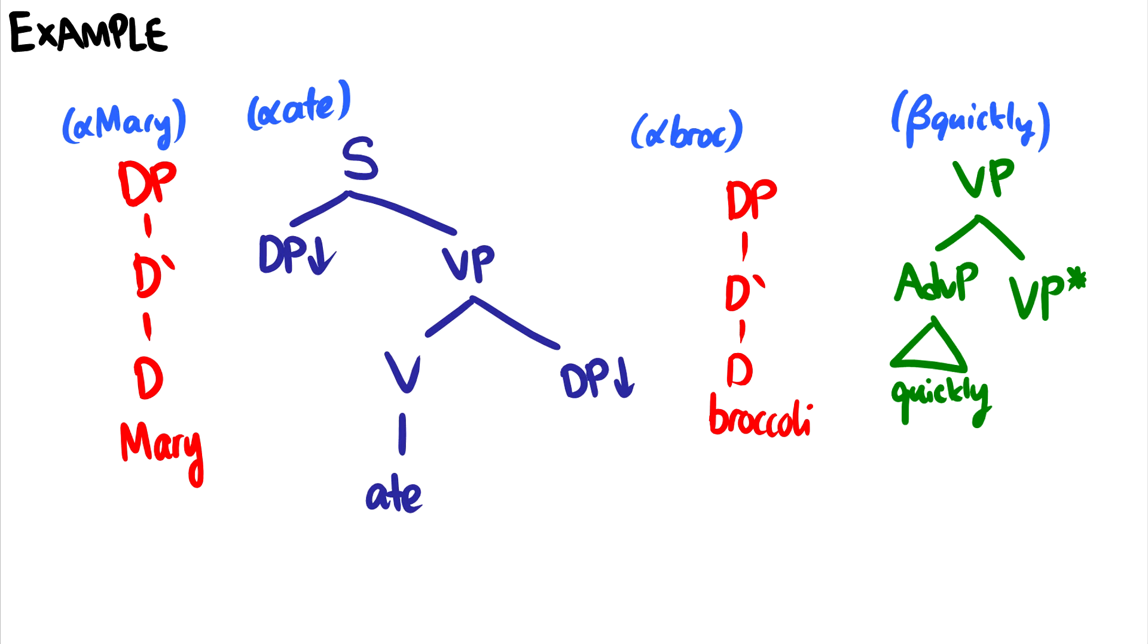So I'll do one example with this just to show off the theory. So here is alpha Mary, so an initial tree for the name Mary. We have an initial tree alpha ate, and this is the verb 'ate'. I'm not using TPs here, but we could use TPs. The linguistic theory can be as simple or as complex as you want. I have an initial tree alpha broc for broccoli, much like the tree for Mary. And then I have beta quickly. I guess with this it doesn't make sense to call broccoli a determiner, so I can cheat there. And then for auxiliary tree alpha quickly, or sorry beta quickly, where we have an adverb phrase with a VP root and a VP foot. So essentially it would adjoin into this VP here. So let's actually make a good syntactic tree using these initial trees and auxiliary trees.